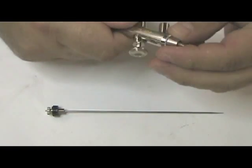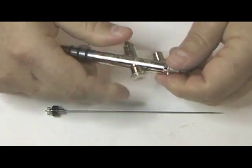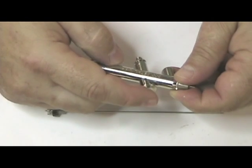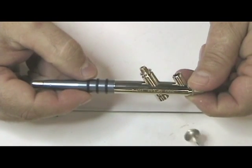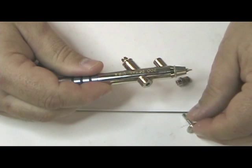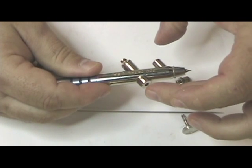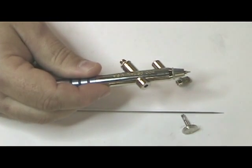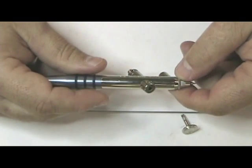Oh, and by the way, this is what is called a single action brush. In other words, the only thing that this button controls here is the amount of air that goes through it. The paint, the amount of paint is a constant amount. With a dual action brush, you can control the air and you can control how much paint comes out through the nozzle. So this is a single action brush.